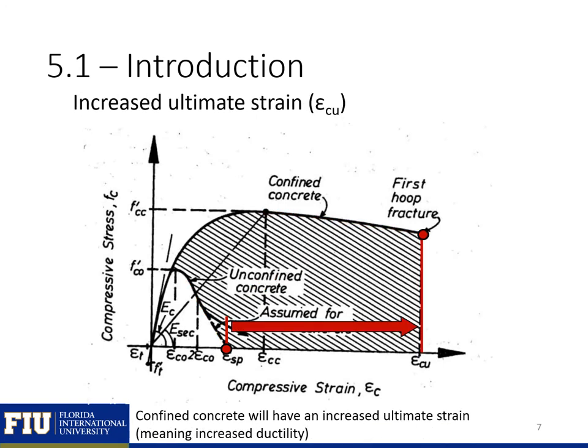The final factor is that confinement will increase our ultimate strain substantially. Our confined concrete is no longer really going to be dependent on the compressive strength of the concrete — it becomes more dependent on the yield strength of our confining reinforcement. One of the failure mechanisms for confined concrete is the fracture of our confining reinforcement, so the first hoop fracture is what controls the confined compressive strength.